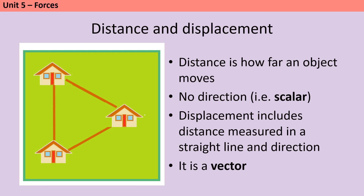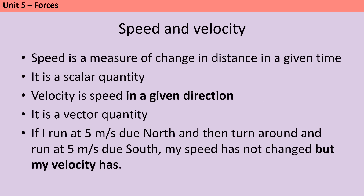Distance and displacement are both linked to how far you travel from a starting point. Distance is about the number of steps actually taken — how far an odometer would read. Displacement is about how far you would need to travel to get back to your starting point in a straight line, and it is a vector with a direction. Likewise speed and velocity may seem similar because they're both about how fast you're moving, but speed is scalar whereas velocity is a vector with a direction. So running at five metres per second north and then turning to run at five metres per second south — the speed hasn't changed but the velocity has and would be expressed as minus five metres per second.